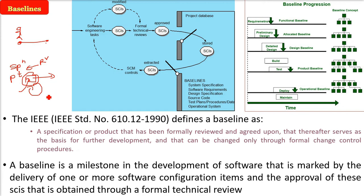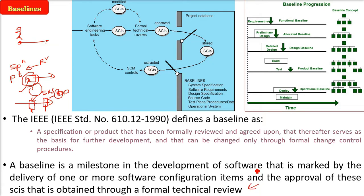A baseline acts as a milestone in the development of software, a web app, or a mobile app. It is marked by the delivery of one or more software configuration items (SCIs) — such as an SRS or a design document — and the approval of these SCIs obtained through a proper formal technical review. So a baseline is a milestone of work products, and changes can only be done through formal technical review.